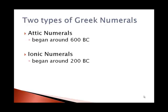There are two types of Greek numerals that I want to tell you about. The older system is known as the Attic numerals, which began around 600 B.C. Of the two, I'm going to ask you to know more about the Ionic numerals. But first, the Attic numerals.